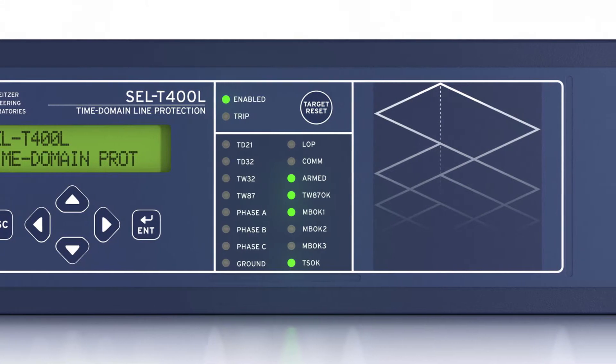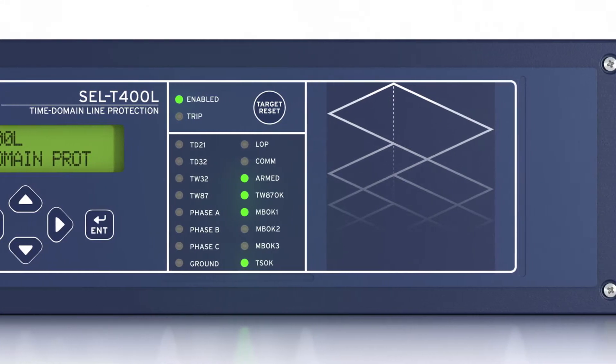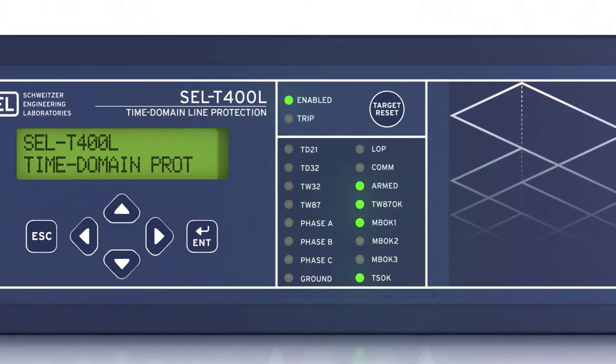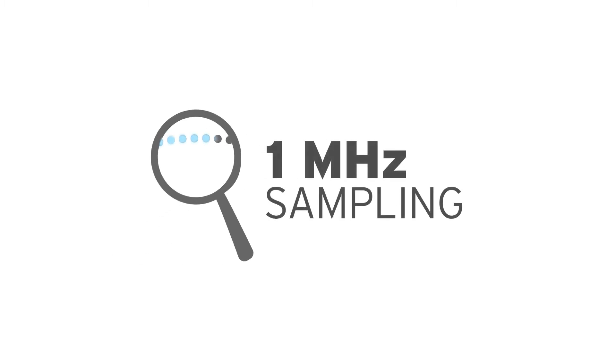By moving towards time-domain and traveling wave principles, we're acting on the samples. And this relay will sample at one megahertz. It means that once every microsecond, we're taking a measurement on the power system, using that information to make a tripping decision. It's never been done before.